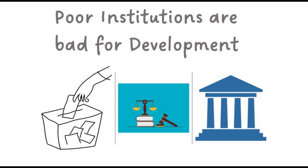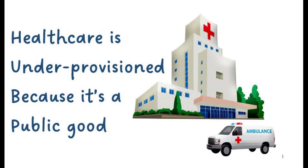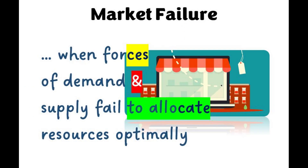We have set out a scenario in which, due to poor institutions, governments may fail to provide health care and other public services. We also briefly spelt out that health care is always under-provisioned because it is a public good. This phenomenon is called market failure — a situation in which the free market fails to provide optimum outcomes.